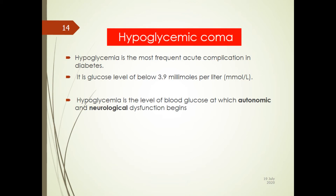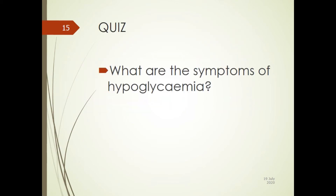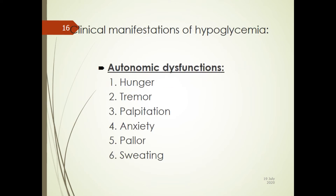The second acute complication is hypoglycemia, the most frequent acute complication of diabetes, whether type 1 or type 2. It can be defined as a glucose level below 3.9 mmol per liter, and can be moderate or severe. At this level, autonomic and neurologic dysfunction begins. Autonomic manifestations include hunger, tremor, anxiety, pallor, and sweating.